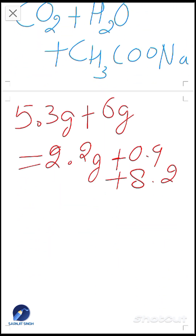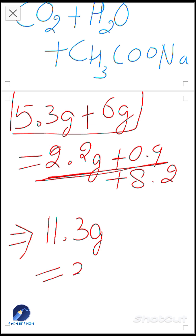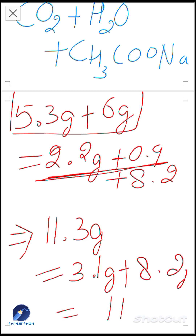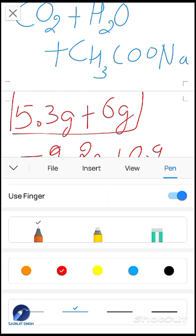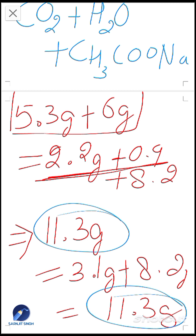Now when you add: 5.3 grams plus 6 grams equals 11.3 grams. And when you add 2.2 grams plus 0.9 grams you get 3.1 grams, plus 8.2 grams, you get 11.3 grams. So 11.3 grams equals 11.3 grams — that means there is conservation of mass.